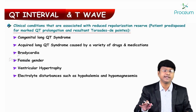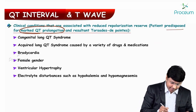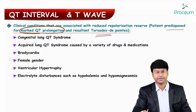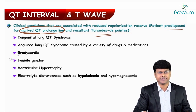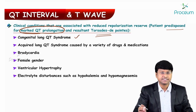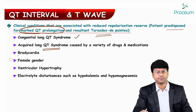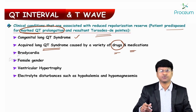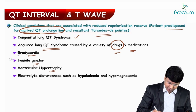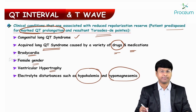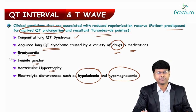Clinical conditions associated with reduced repolarization reserve — patients predisposed to marked QT prolongation and resultant torsades de pointes — include: congenital long QT syndrome (Jervell and Lange-Nielsen syndrome and Romano-Ward syndrome), acquired long QT syndrome caused by drugs and medications, bradycardia, female gender, ventricular hypertrophy, and electrolyte disturbances such as hypokalemia and hypomagnesemia.